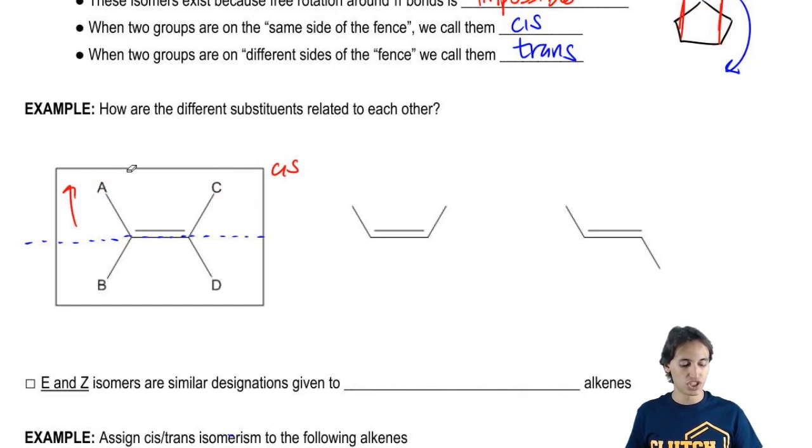What about the relationship between B and C? What would that relationship be? Well, those are on different sides so that one would be trans. Got that so far?